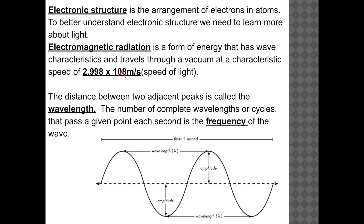When we look at a wave, some terms to be aware of: one is the wavelength. The wavelength is the distance between two peaks — from here to here — or it can also be between the troughs at the bottom. We also have frequency, which relates to the number of wavelengths, or cycles, that pass a given point each second.